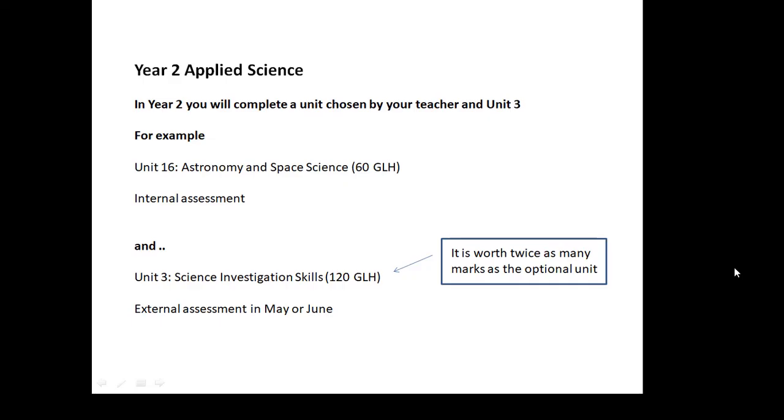Year 2 Applied Science. In Year 1, you do Certificate. You do Units 1 and 2. In Year 2, you do Extended Certificate, and at least this is what we do in my college. And basically, you do a unit chosen by your teacher, and you do Unit 3.